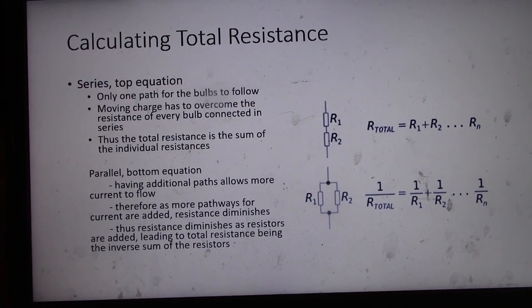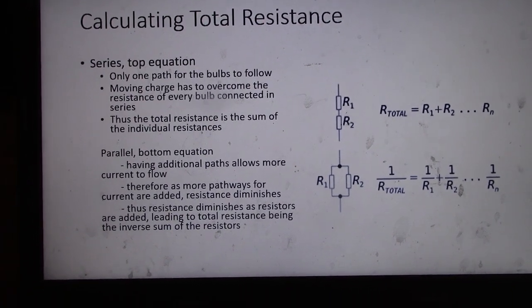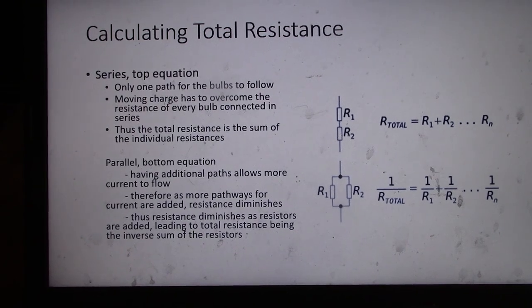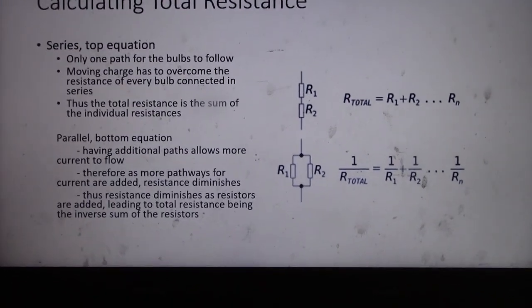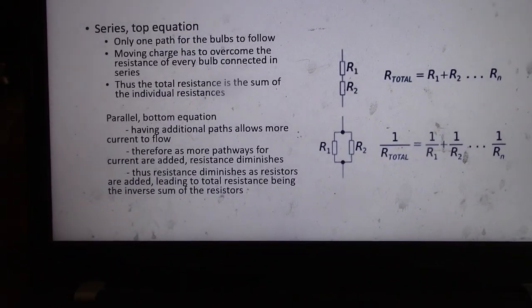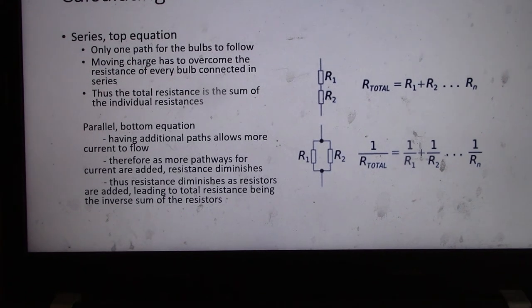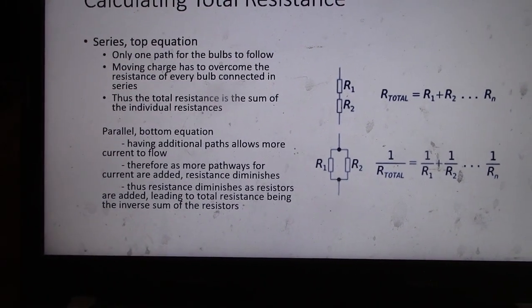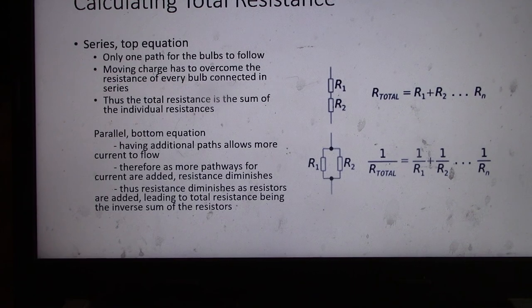We can apply this to circuits as well. For total resistance of a series circuit it's the sum of all resistances; for a parallel circuit it's the reciprocal sum. In a series circuit, total resistance is the sum of the individual resistances. Current increases in a parallel circuit because we add more pathways, so resistance diminishes as more resistors are added.